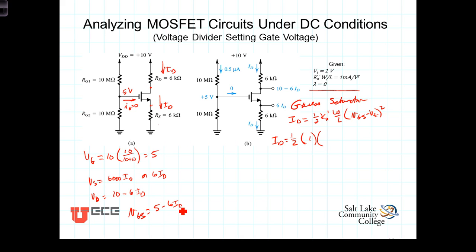So coming back up here we've got then V_GS which we now have is 5 minus 6*I_D minus V_T which we're told is 1 quantity squared gives us the expression for the current flowing through this transistor if it is in the saturation region. Now we can go ahead and 5 minus 1 so we've got then that this is equal to one half times 4 minus 6*I_D quantity squared.